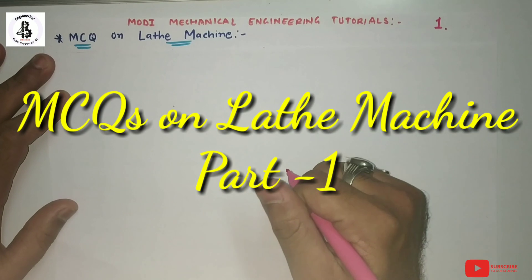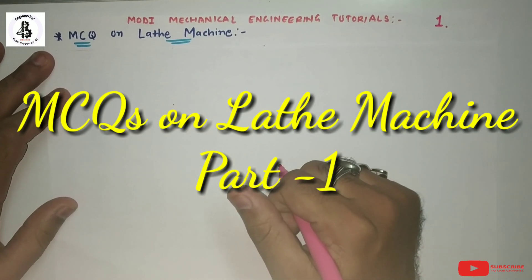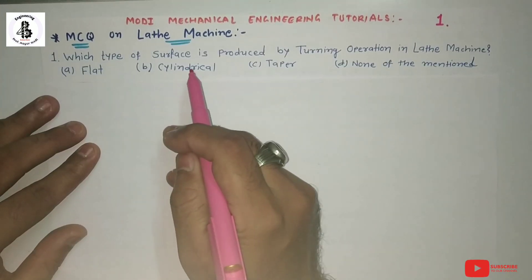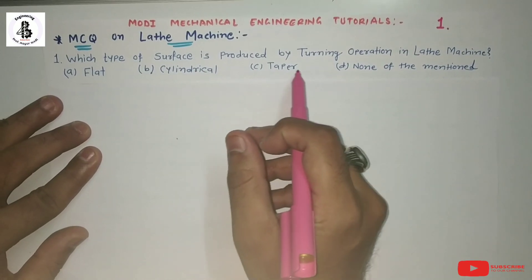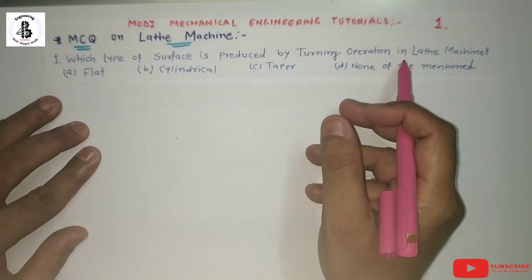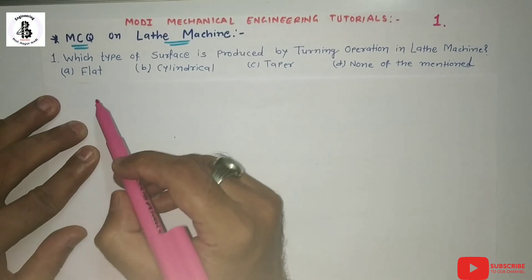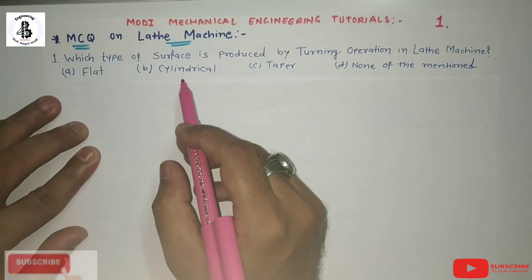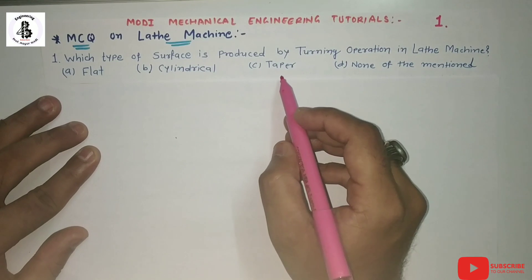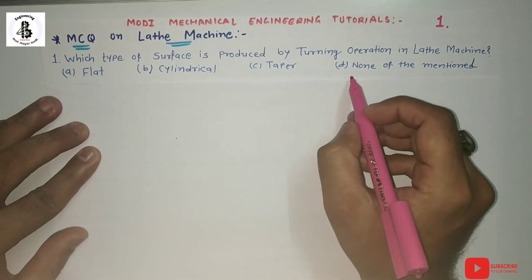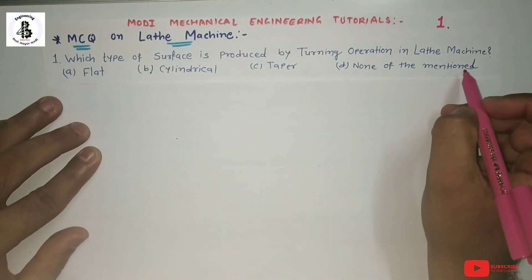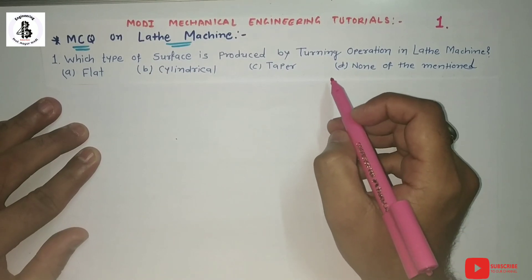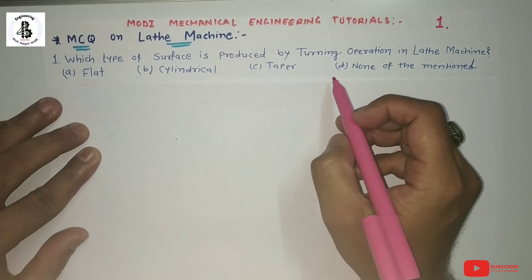Let us start with question number one: which type of surface is produced by turning operations in lathe machines? Option A: flat surface. Option B: cylindrical surface. Option C: taper surface. Option D: none of the above. This question is about the different kinds of operations carried out on lathe machines.